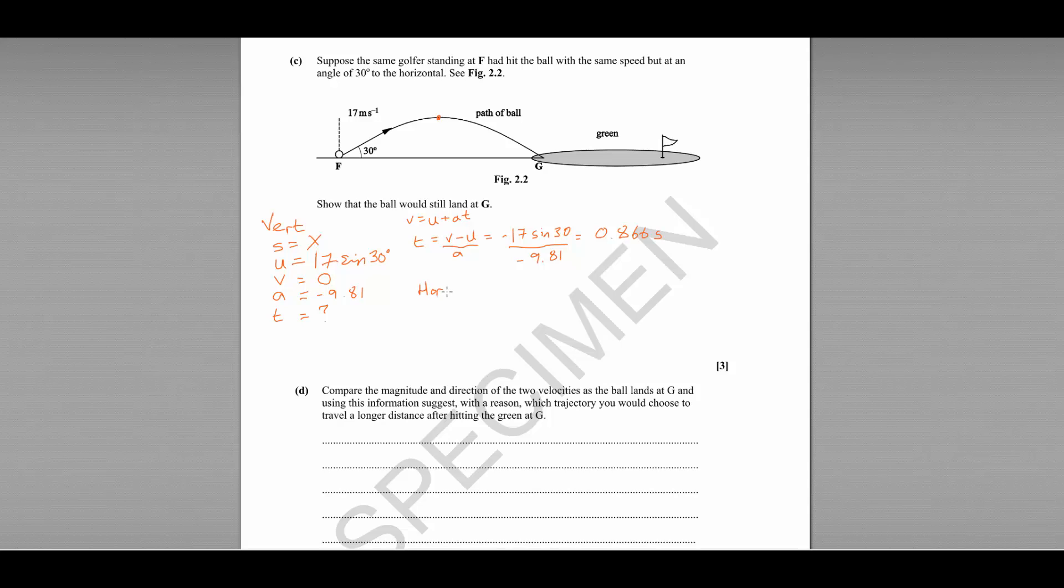Now if we switch to consider the horizontal motion, horizontal motion is at a constant speed, constant velocity. So we can use velocity equals displacement over time. So to find our displacement here, S equals VT where V horizontally is 17 cos 30. The horizontal component of that speed, 17, multiplied by our time, which is 0.866 times 2 for the same reasons as described earlier. If the time to get to the top is 0.866, the time to get back down again will be double that number. And that gives us an answer of 25.5 metres.